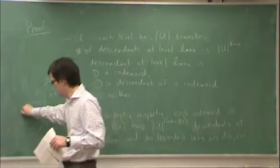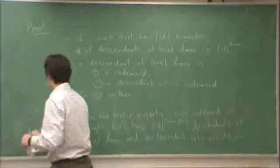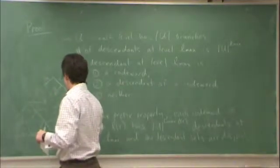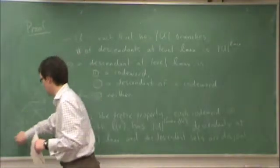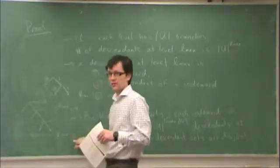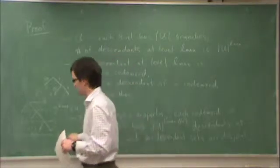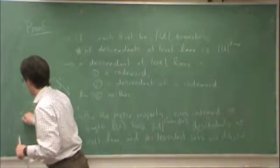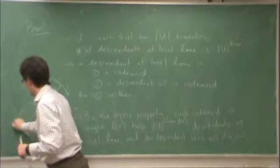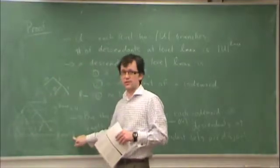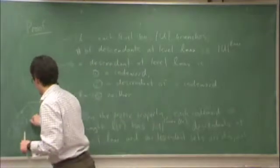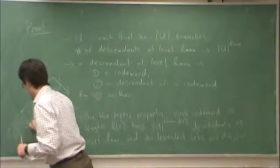This codeword at level 1, Lmax is 3. This codeword at level 1 has 4 descendants at level 3. That's 2 to the power of 3 minus 1, and that's because from this point I can construct a tree with 3 minus 1, which is 2 levels. Similarly, from this point I can construct a tree with 1 level.